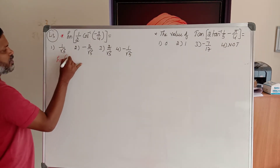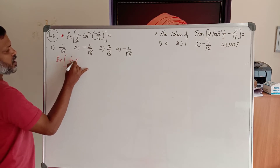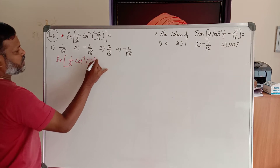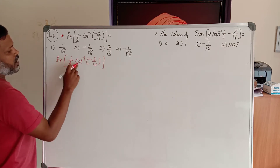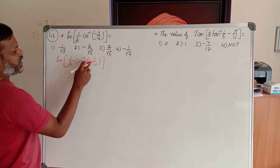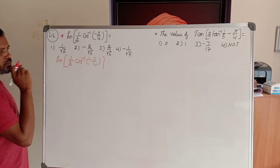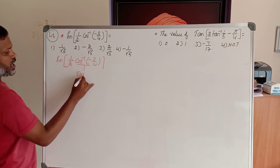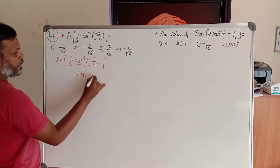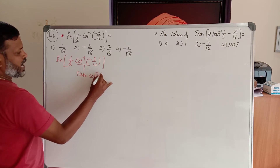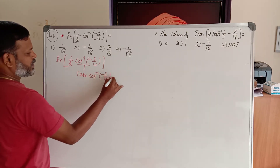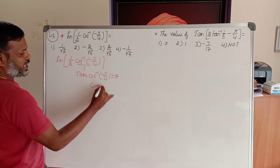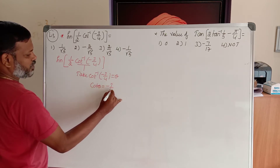...sine of cot inverse of minus 3 by 4. Now, inside cot inverse we have minus. So I have to take cot inverse of minus 3 by 4 as some theta. That means cot theta is equal to minus 3 by 4. Note this point.